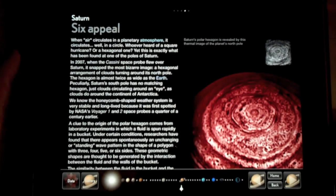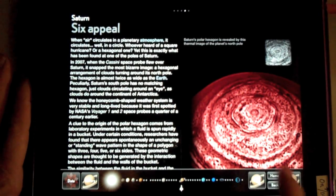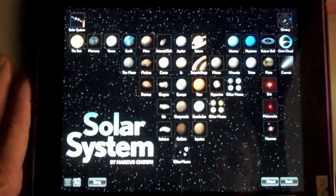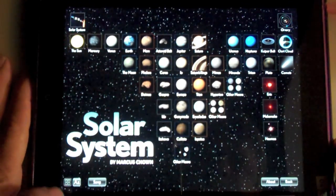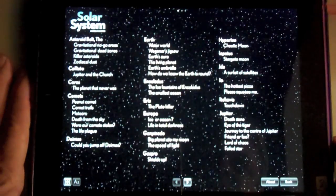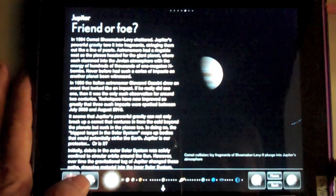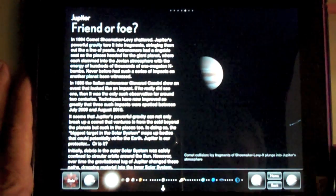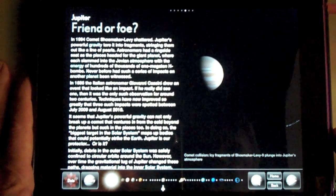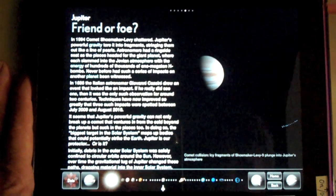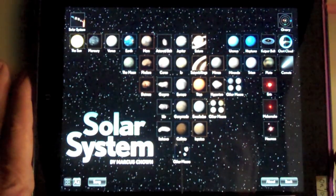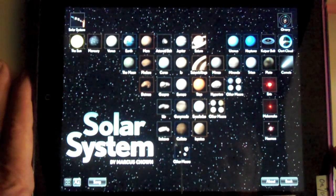One of the things I noticed that I didn't see, that I always like on any sort of reference, is some form of search. There is a directory here. I can zoom right in, but if I wanted to search on, say, one of Saturn's moons, I'd kind of like to zoom in on that faster.